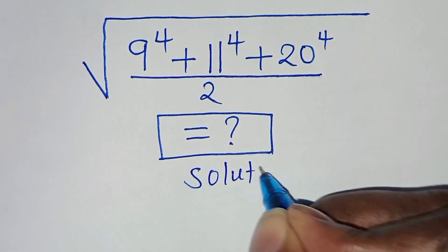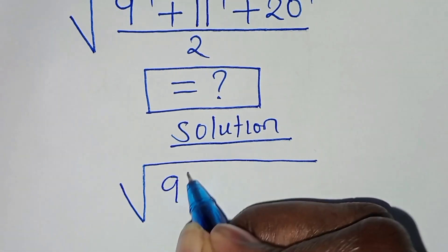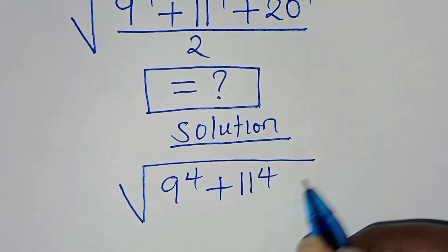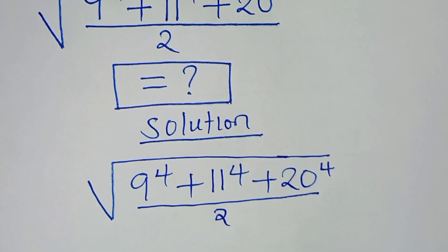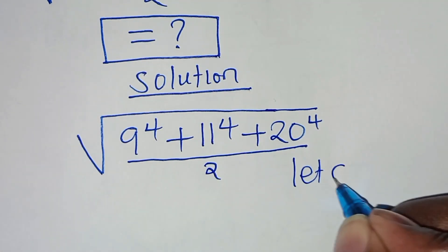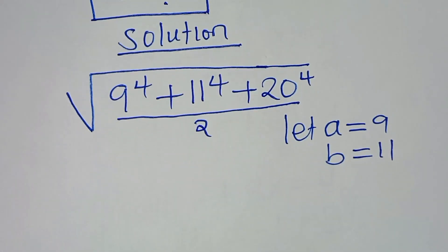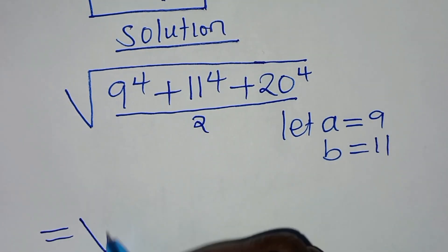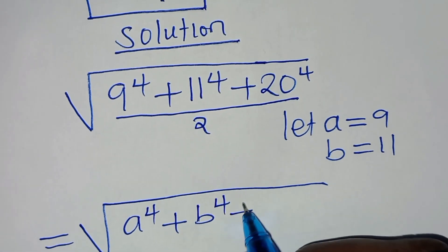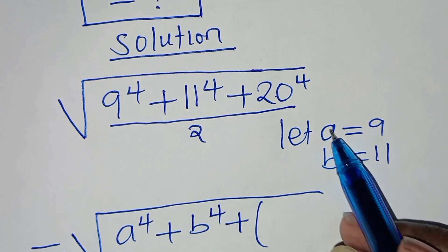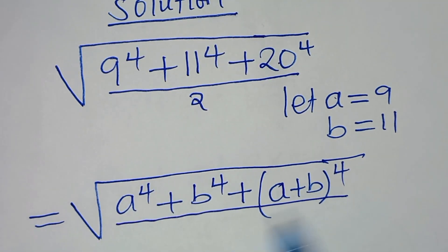Let's present a solution from here. We have the square root of 9 to the power of 4, plus 11 to the power of 4, plus 20 to the power of 4, everything divided by 2. The first thing to do: we let a be equal to 9, b be equal to 11. Substituting, we note that 20 can be expressed as a plus b, so we have the square root of a to power 4 plus b to power 4 plus (a+b) to the power of 4, divided by 2.